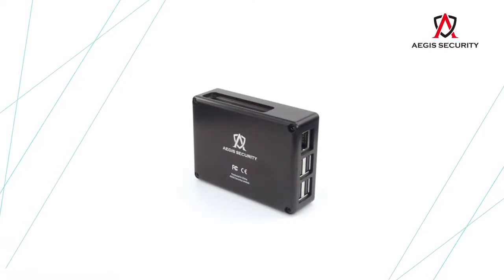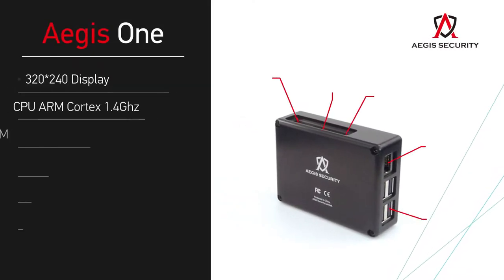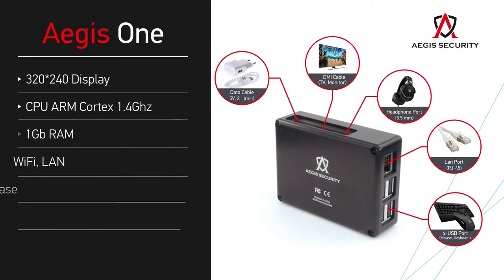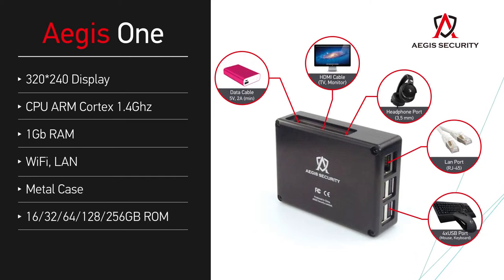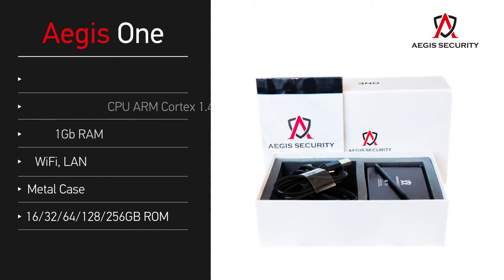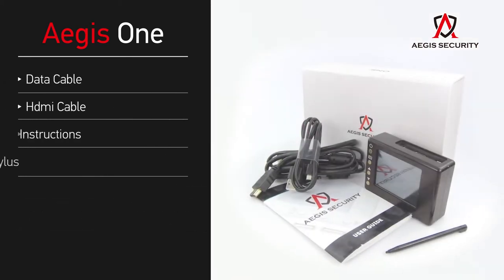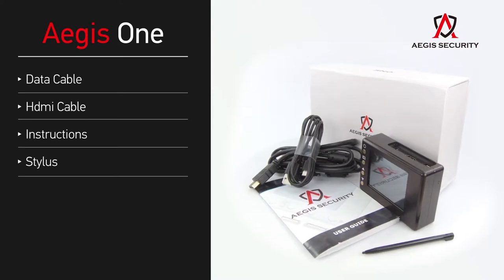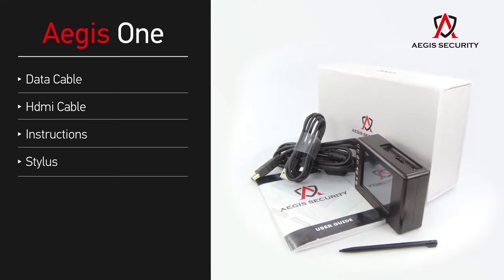Aegis One is the world's first mini-computer that fully protects your anonymity on the Internet, as well as any information that is stored in the device's internal memory. The package includes a device, data cable, HDMI cable, and instructions for using Aegis One.